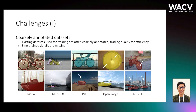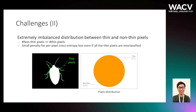First, existing datasets used for training segmentation models are often coarsely annotated, where fine-grained details are ignored during the annotation process. For example, bicycle spokes and boat stays are missing. Secondly, the distribution between thin and non-thin pixels is extremely imbalanced. Most segmentation models adopt a pixel cross-entropy loss and treat each pixel individually during training. As a result, misclassification of a few thin pixels produces low cost to the overall loss, making learning less effective.